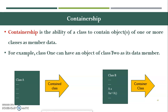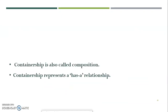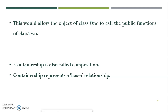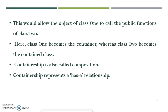Learning more about containership: this allows the object of class 1 to call the public functions of class 2. Using an object of class 1, the public functions of class 2 can be accessed. Here class 1 becomes the container and class 2 becomes the content class. Containership is also called composition, and it represents a has-a relationship.